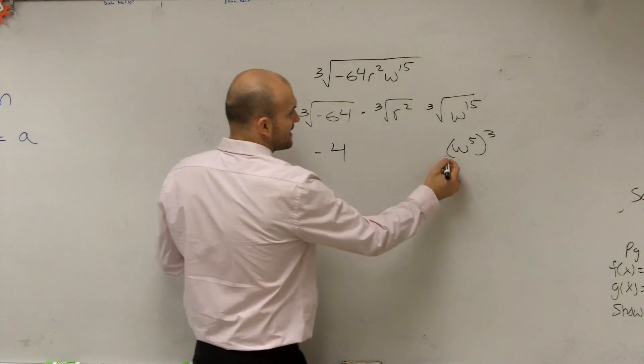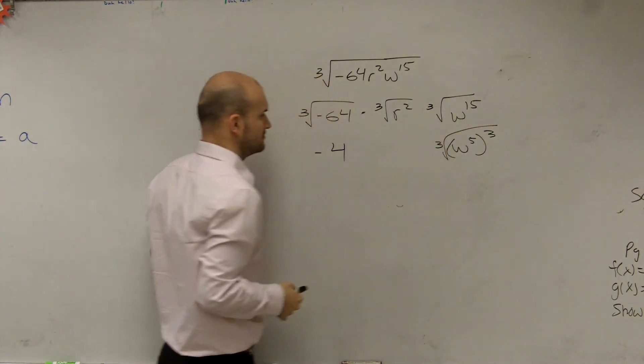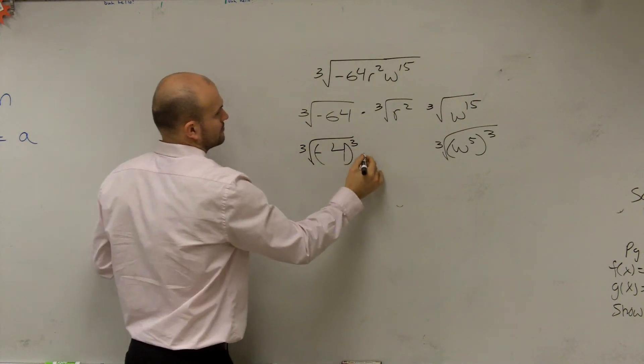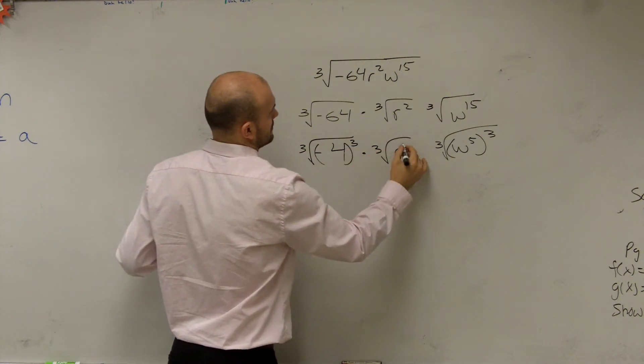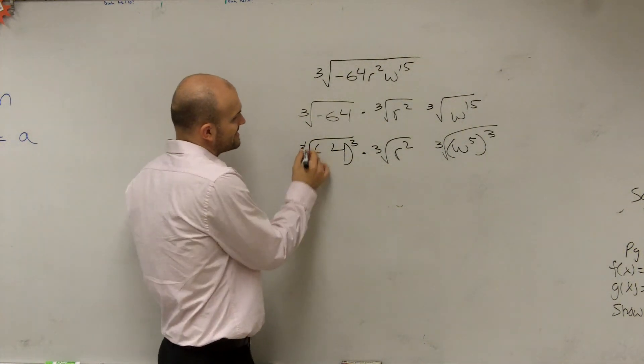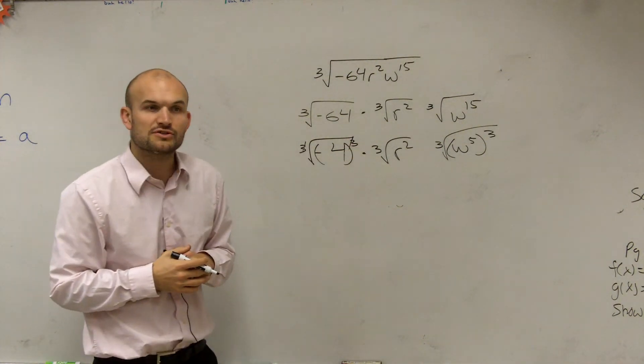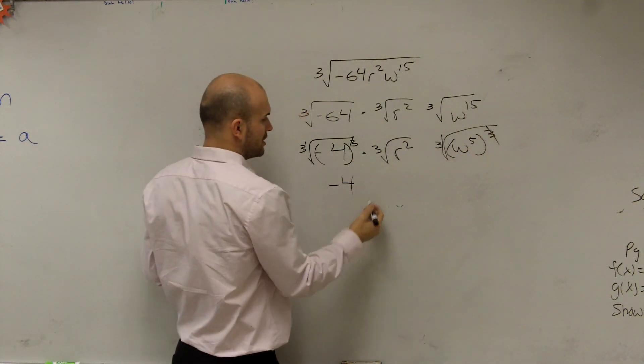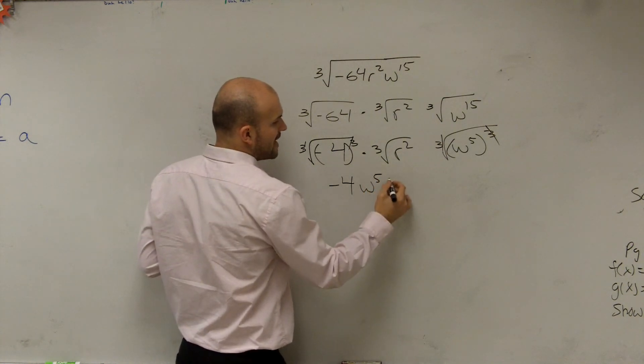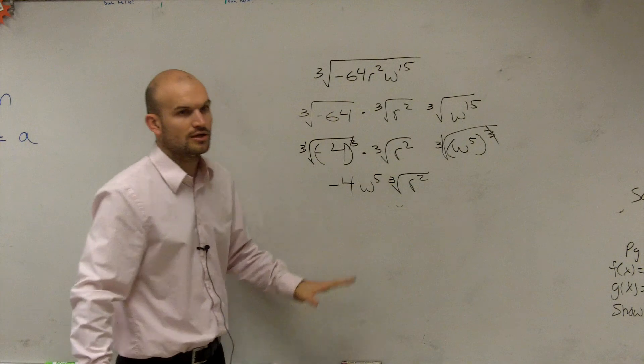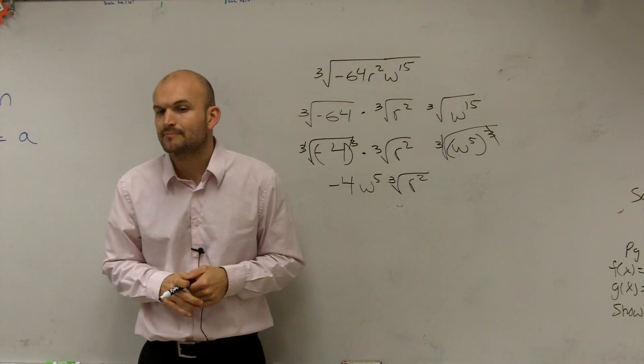And the reason why I want to write it like that, the reason why this is important, Alex, is that you notice these two are now going to undo each other. So you're just left with negative 4. These two are going to undo each other, you're left with w to the 5th. And then you're left with the cube root of r squared, which we'll just leave in that format.